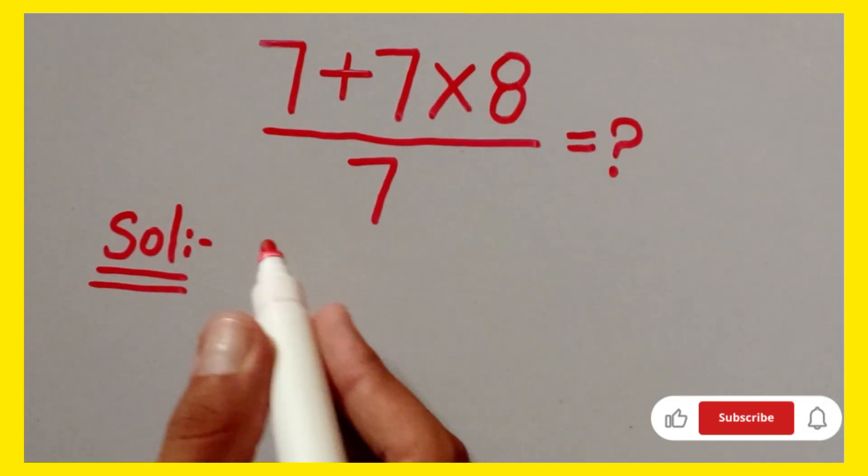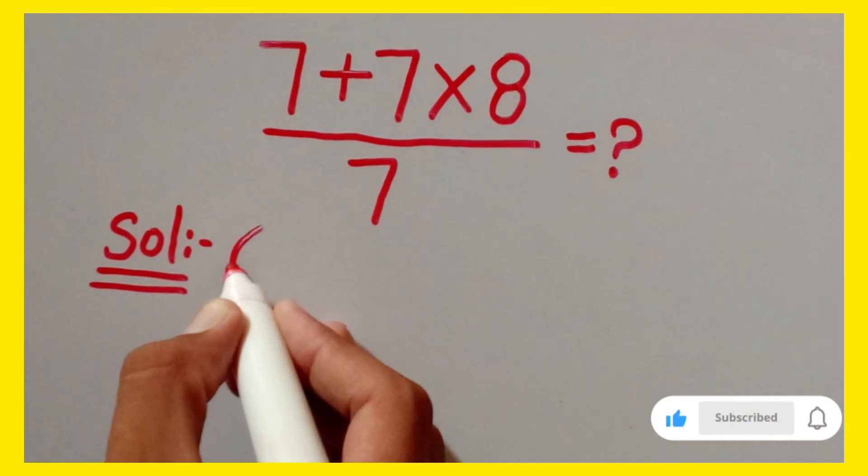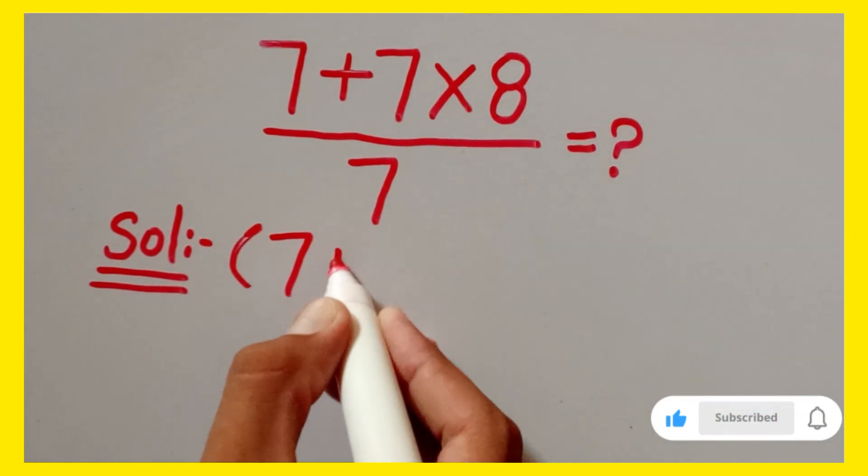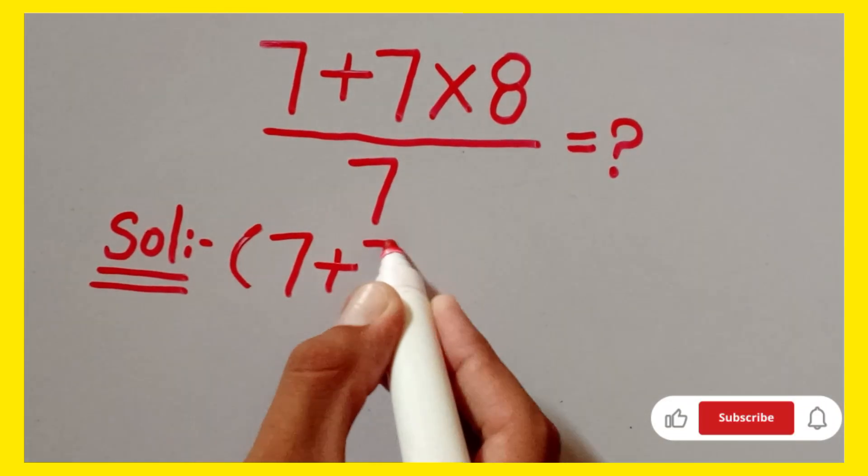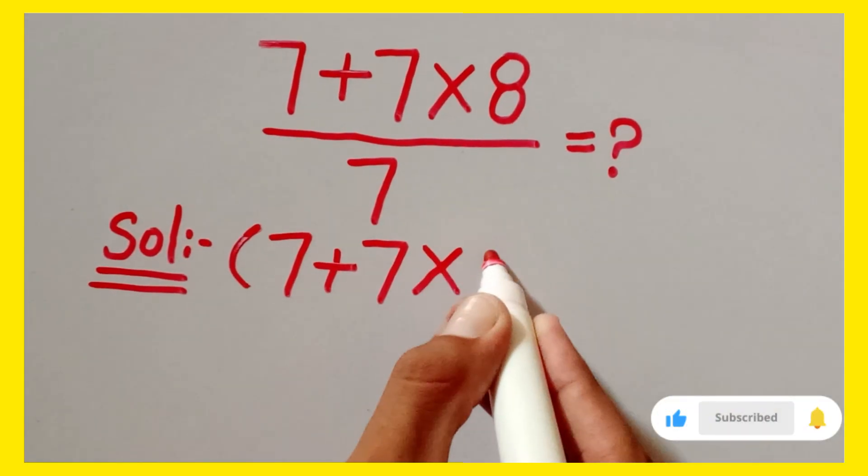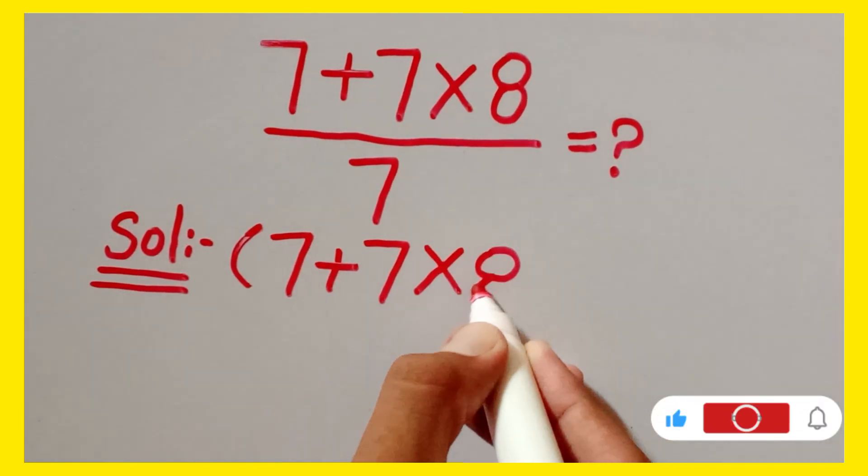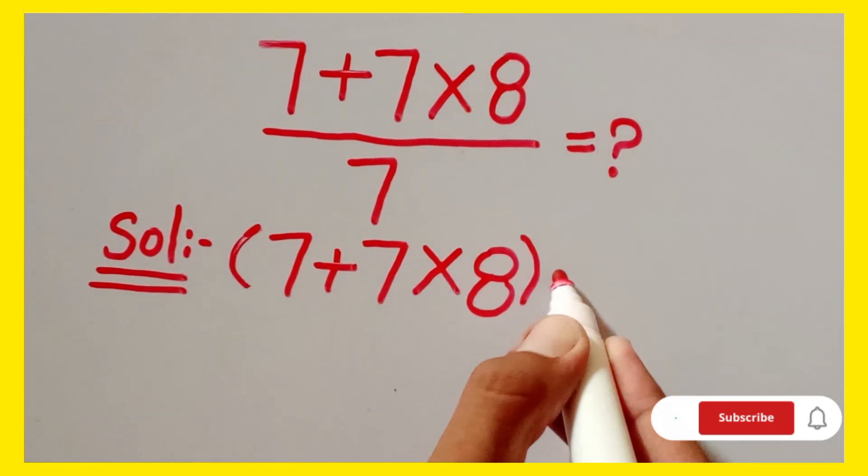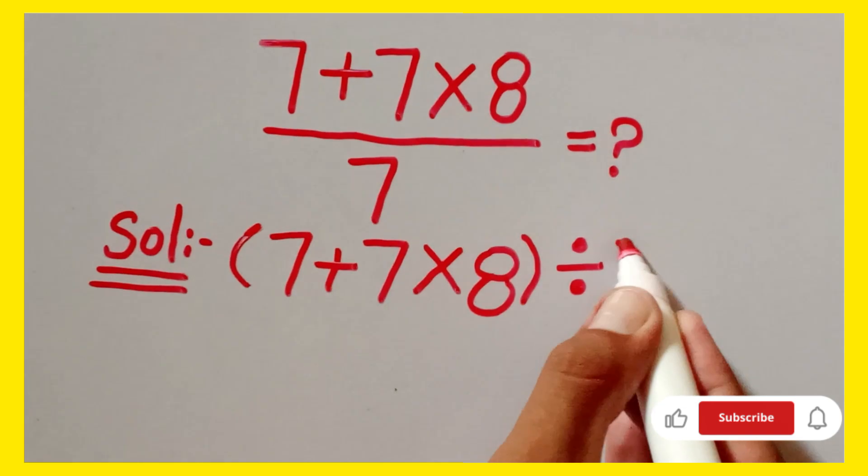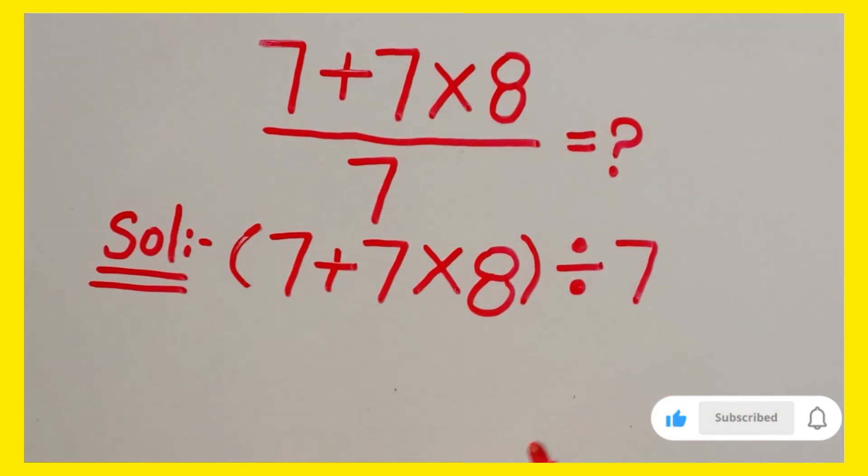So I can write here, this is 7 plus 7 multiply by 8 divided by 7. Okay guys.